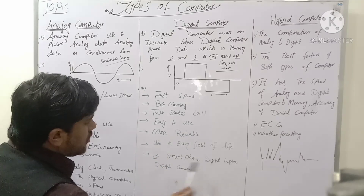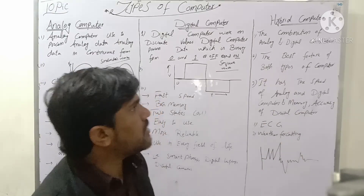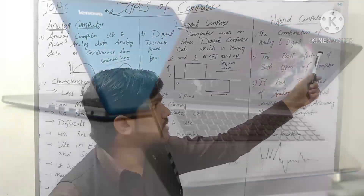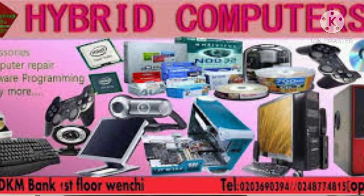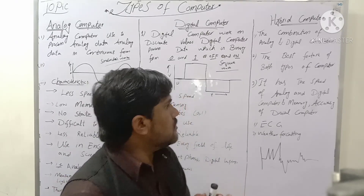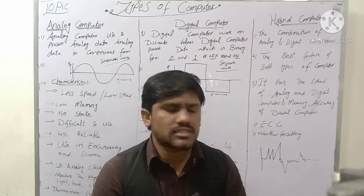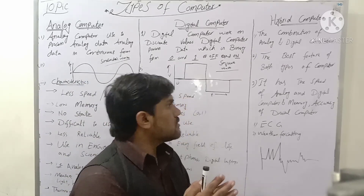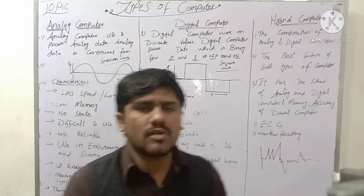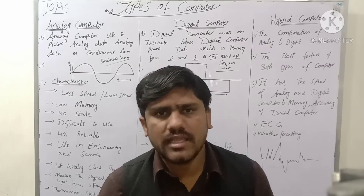Examples of digital computers are smartphones, digital laptops, and digital cameras. Hybrid computers are the combination of analog and digital computers, taking the best features of both. They are used in ECG, weather forecasting, and airports. This was the topic of types of computers — I hope you understood. Thank you very much.